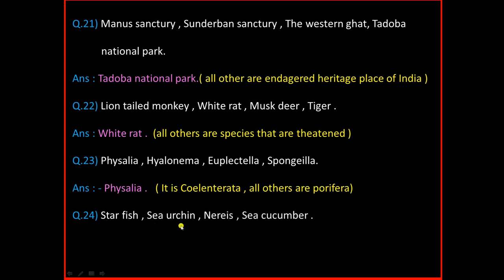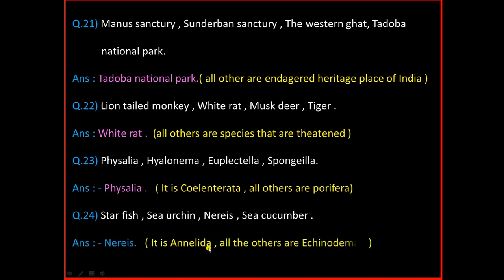Question Number 24: Starfish, Sea Urchin, Nereis, Sea Cucumber. And the answer is Nereis. Nereis is Annelida and all others are Echinodermata.